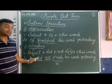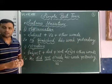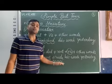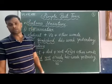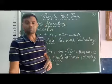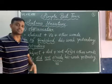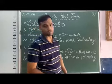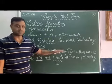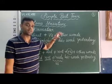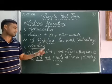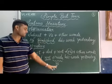Students, remember: in the negative of simple past tense, we use the helping verb 'did'. When we use 'did', we have to remove the past form of the verb — that is, we remove V2 and use V1, the present form of the verb. This is the area where most students make mistakes. So remember: when we use 'did' as a helping verb for making negative and interrogative sentences, we use V1.